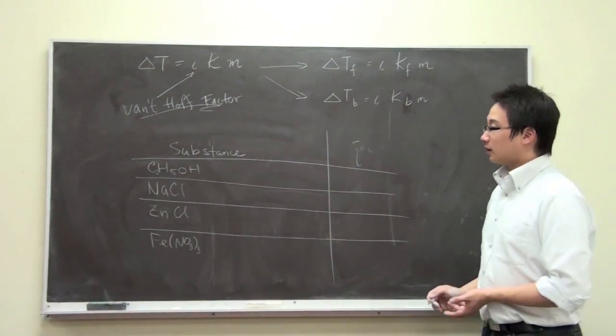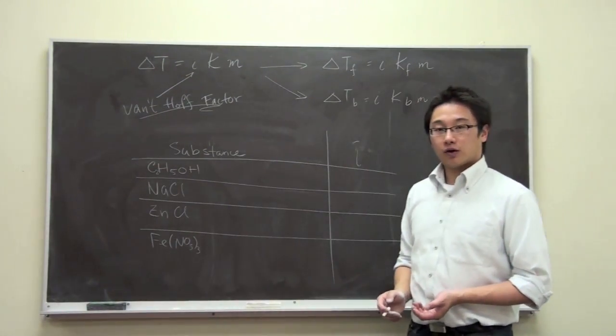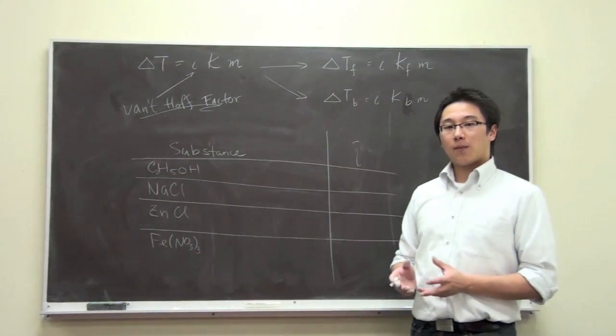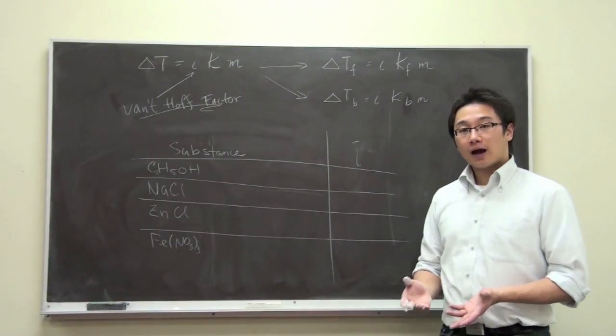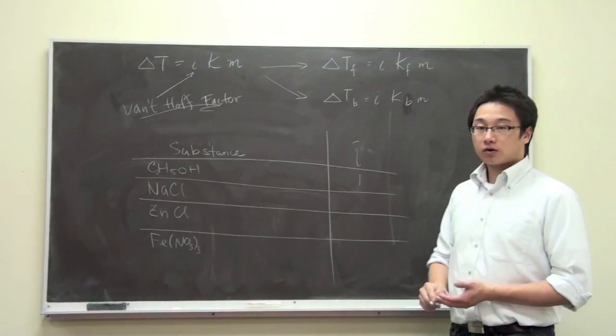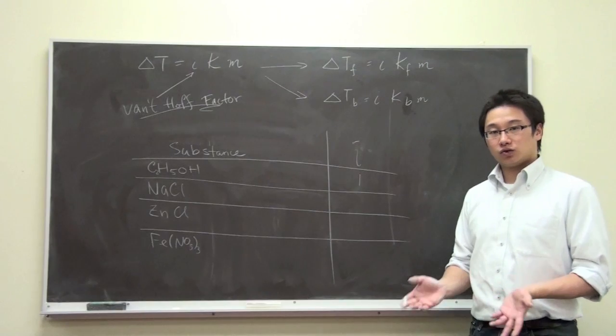Let's look at the first substance here, ethanol, C2H5OH. Well, it is a covalent compound, and it is a covalent compound that doesn't really dissociate. So in this case, the Van't Hoff factor will be one because it cannot dissociate.